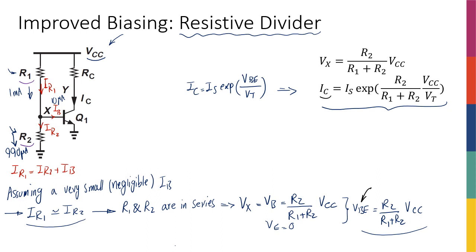once I set the Vbe, it's almost as if I set the Ic because I have set this guy, this is constant, and Is is constant, so I've actually found Ic. And then from here, I can actually calculate Ib as Ic divided by beta.